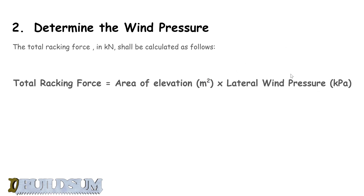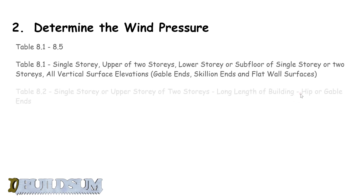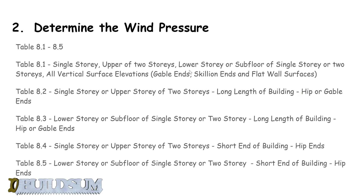There are five tables. Table 8.1 is for single storey or upper storey, or the upper of two-storey buildings, lower storey and subfloor of a single storey or two-storey — all vertical surfaces, gable ends, scion ends, flat wall surfaces. So if your building has a flat gable or a scion, you would use table 8.1.